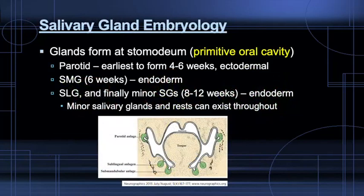Embryologically, salivary glands arise from the primitive oral cavity or stomodium. The parotid is the first gland to form and arises from ectoderm, and the smaller glands are endodermal derivatives and form a few weeks later. Minor salivary gland rests are deposited throughout, especially in the oral cavity, which we'll discuss later in the talk.